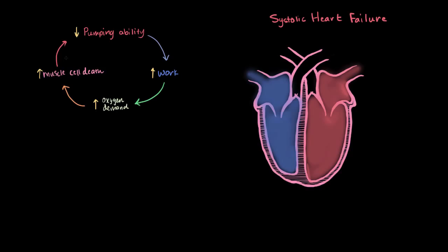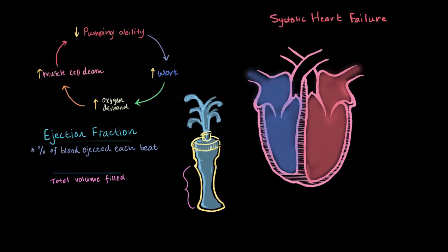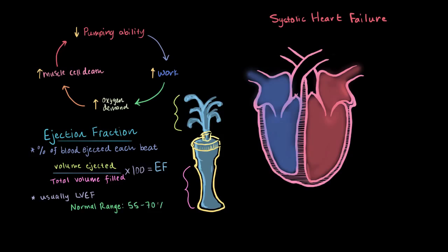Pumping ability is really important, and one way to measure it is by ejection fraction — the percentage of blood ejected with each beat. You take the total volume ejected divided by the total volume filled, then multiply by 100 to get the percentage. A normal range is about 55–70%. An abnormal range is considered anything between 40–55%. And evidence for heart failure is anything under 40%.